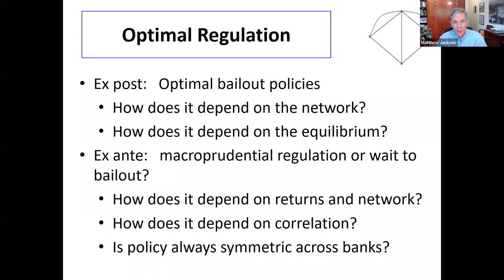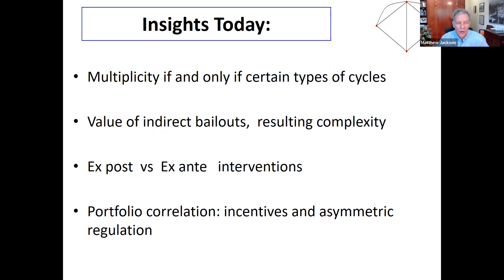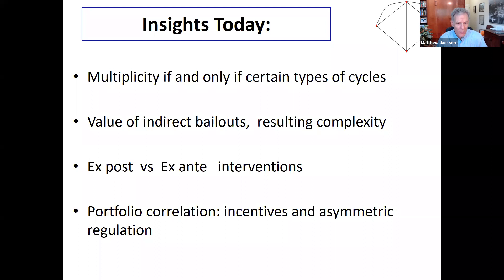There can be situations where we get asymmetries. The kinds of insights we're going to end up with today: we'll look at a very simple model and show that there's multiplicity if and only if there are certain types of cycles in the network. We'll highlight the value of indirect bailouts and the resulting complexity. We'll talk about what we can and can't say about bailout policies. Then we'll discuss ex post vs. ex ante regulation and identify conditions under which it's better or worse to wait and bail out ex post. We'll also discuss incentives for correlation and why optimal regulation can actually be asymmetric — treating fully symmetric banks asymmetrically.